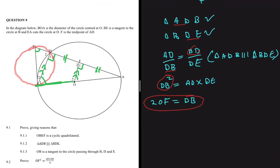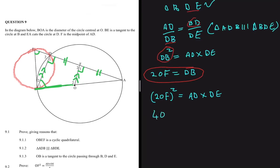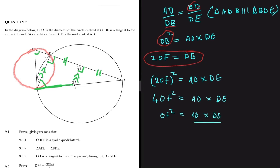Substituting back: (2·OF)² = AD × DE, so 4·OF² = AD × DE. Dividing both sides by 4 gives OF² = AD × DE ÷ 4, which is what we were required to prove.